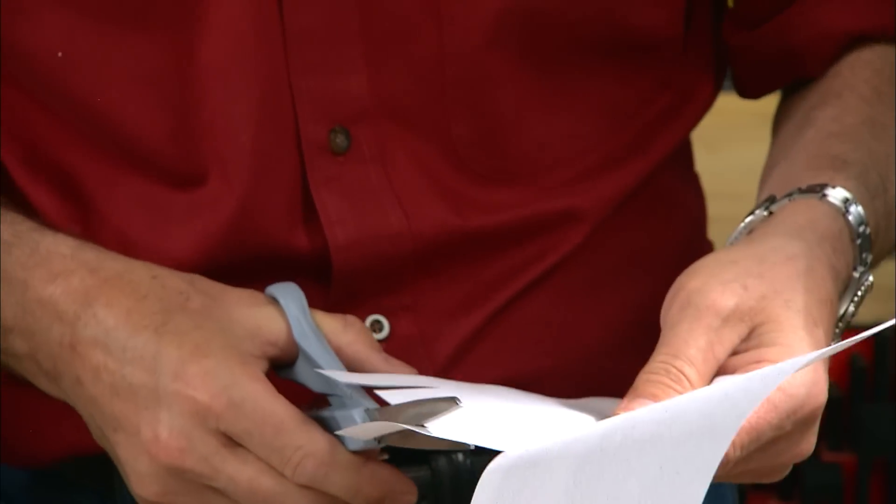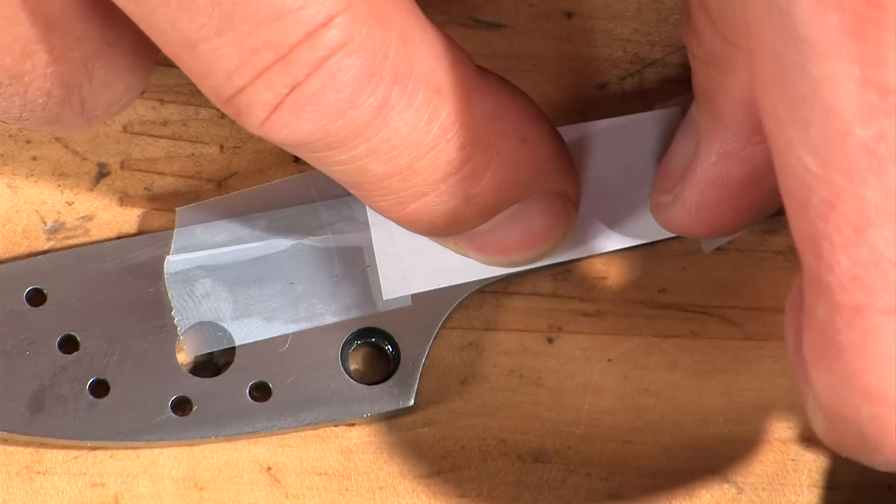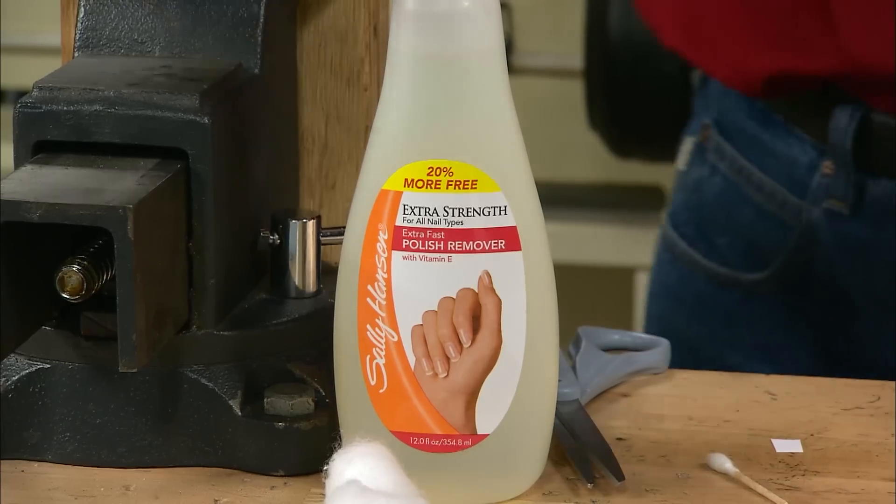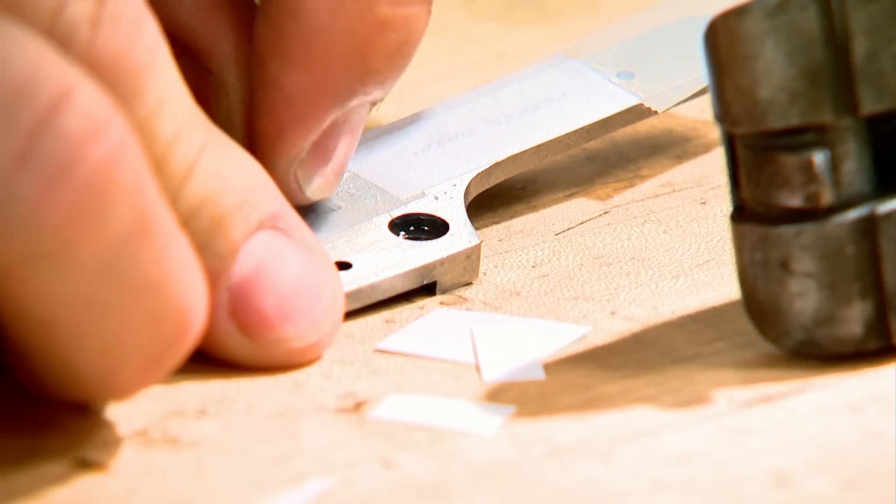Then I'll make a photocopy of the image and tape it to the lock plate. A bit of acetone will melt the ink on the paper transferring it to the metal. Pretty cool.